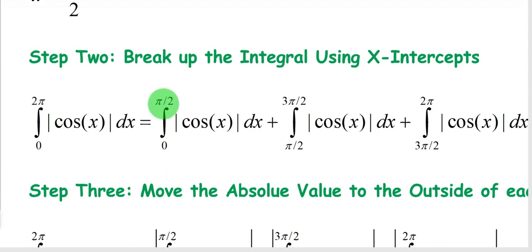The first one is from 0 to π/2, our first x-intercept of cosine of x, absolute value. The second one is from π/2 to 3π/2, so our two x-intercepts. And the third one is from 3π/2 to 2π, all of absolute value cosine of x.